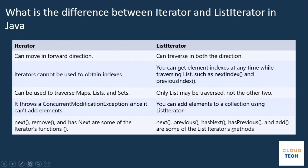The first question that was asked is: what is the difference between iterator and list iterator in Java? These are the two types of iterators by which you can traverse through collections. Using iterator, you can only move in the forward direction. But using list iterator, you can traverse in both directions — forward and reverse.